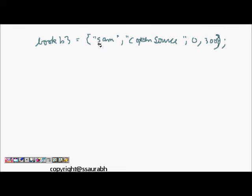Now let's see how to initialize. We can write book b3 is equal to, so directly I can write author name here, C open source, and then price 0, number of pages 300. So this is a way of initializing book b3 using structures.